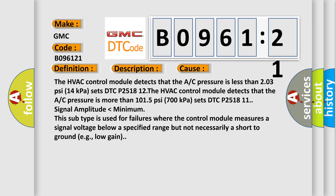Signal amplitude lower than minimum. In addition, this subtype is used for failures where the control module measures a signal voltage below a specified range but not necessarily a short to ground, for example, low gain.